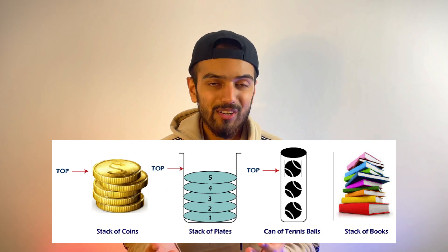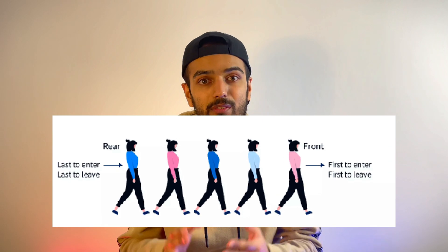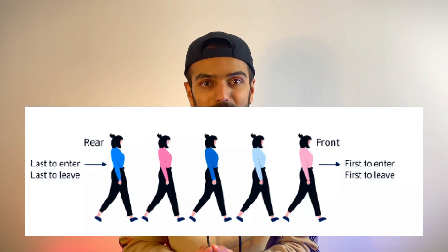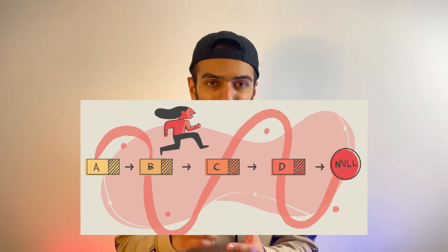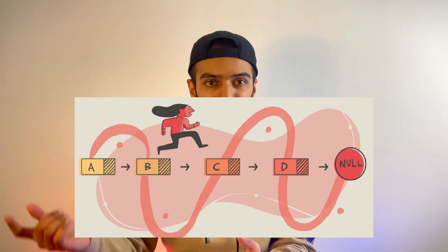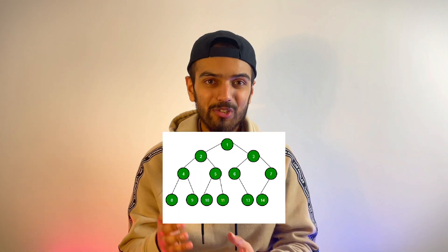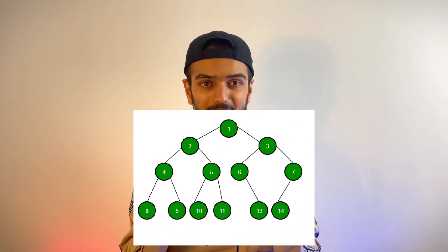You learn what stacks are — stack meaning last in first out. You learn queues, which are first in first out. You learn linked lists, where you have nodes with data pointing to other nodes, and you also learn trees — specifically binary trees — and graphs. This is going to be very exciting.